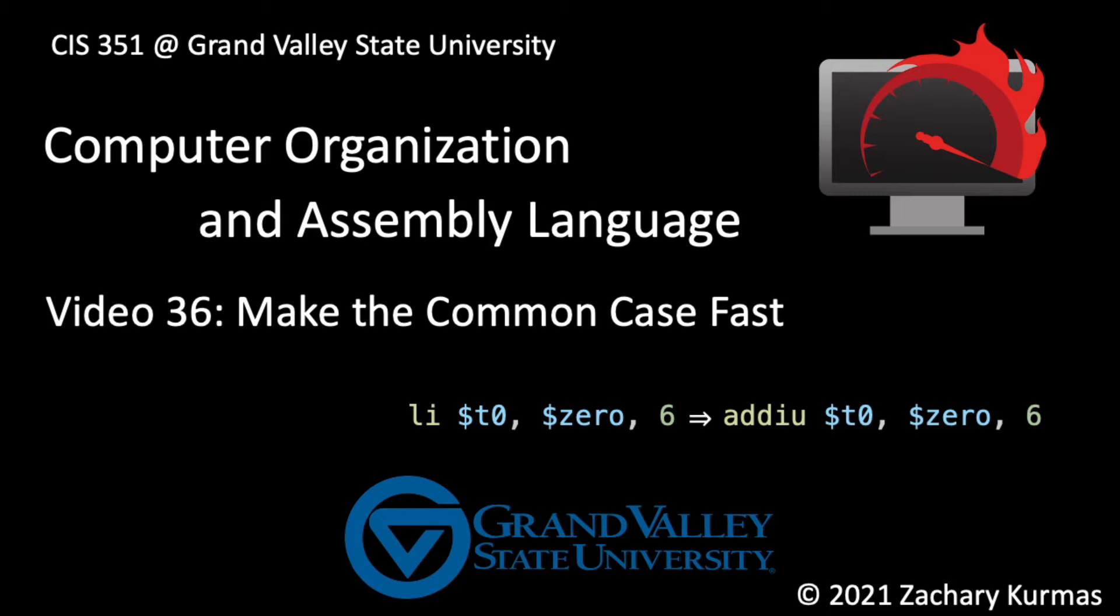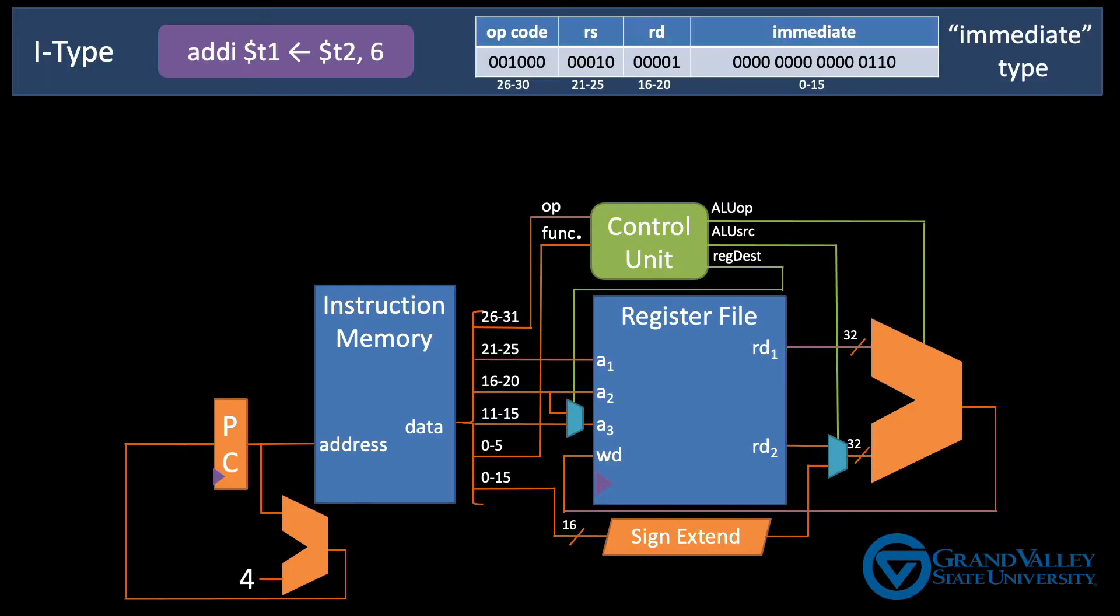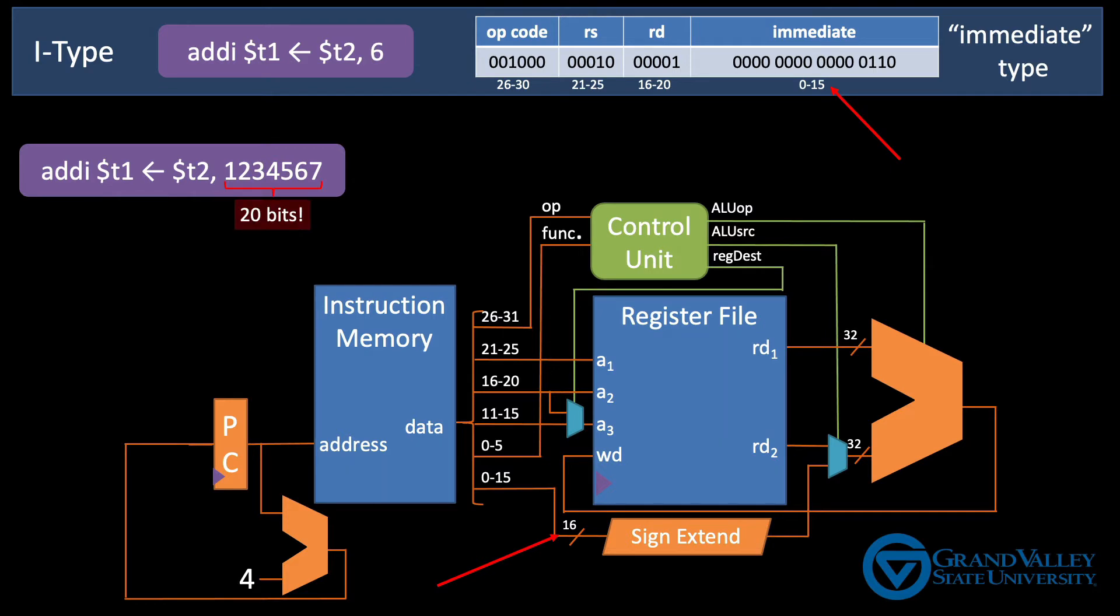Video 32 discussed the MIPS I-Type instruction, instructions like this one that add the constant 6 to register T2. But remember, the immediate field in the instruction is only 16 bits. So what happens if that constant is larger than that? For example, how do we fit a 20-bit immediate value into a 16-bit field?